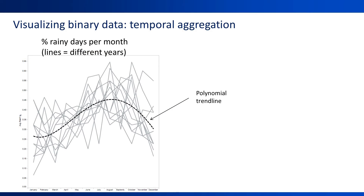Instead, we're going to look at aggregated versions of the series. Here's a chart aggregated across all days in one month. The x-axis is the month of year, the y-axis is the percent of rainy days in that month, and each line denotes a single year. This plot clearly shows monthly seasonality, and the seasonality smoothly transitions between months. We can overlay different trend lines — a polynomial trend line seems to capture the monthly seasonality well. In summary, with a binary series, visualization is typically easier if we look at different aggregations of the series.